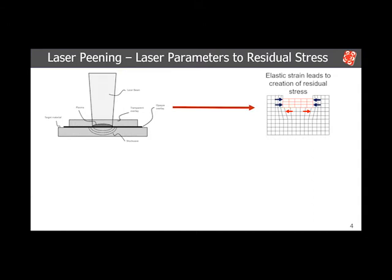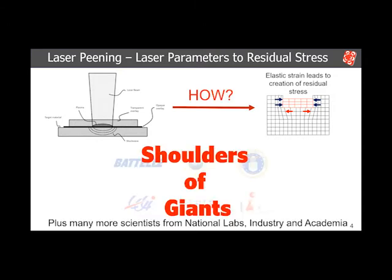How do we tie our laser peening parameters into residual stress? What does that actual process flow look like? What are the techniques available, and how do we get there? Everything we're doing now, we are standing on the shoulders of giants. All of the information created in the past has led us to the techniques we have available now. We've already heard great talks on the history of laser peening from Alan Clower yesterday, and Dr. O'Khani this morning, and Dr. Malik and Dr. Fitzpatrick have all really helped advance the science of modeling the laser peening process.